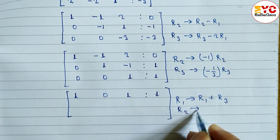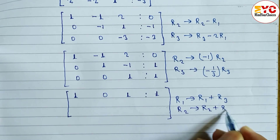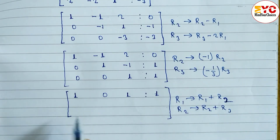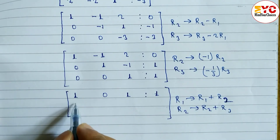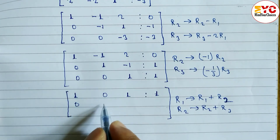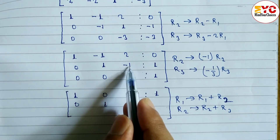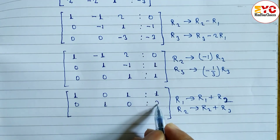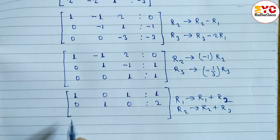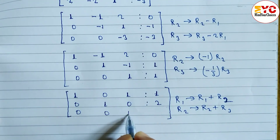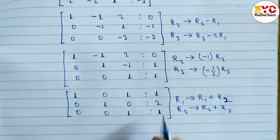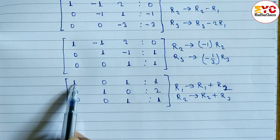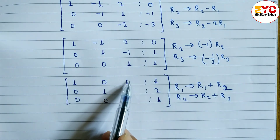We apply R2 → R2 + R3 to eliminate the -1 in row 2 column 3. Adding: 0+0=0, 1+0=1, -1+1=0, and 1+1=2. The new second row is 0, 1, 0, 2. Row 3 remains 0, 0, 1, 1.